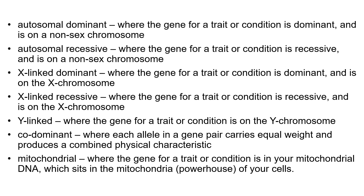Briefly, dominant means the trait is expressed if at least one dominant allele is present — for example, big D small d for brown eyes. Recessive means you need two copies of the recessive allele. X-linked refers to whether the gene is on the sex chromosome, since we have 22 pairs of autosomes and one pair of sex chromosomes.